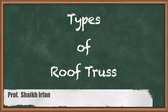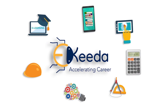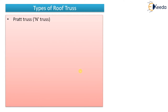Hello everyone. In this video we are going to see different types of roof trusses. The list of different types is very large — there are so many types of trusses used generally for roofs. I will tell you one by one, and I will also tell you which type of roof truss to use for a particular span — for example, spans of 15 to 20 meters, 20 to 30, 30 to 40, 50, and 60 meters.